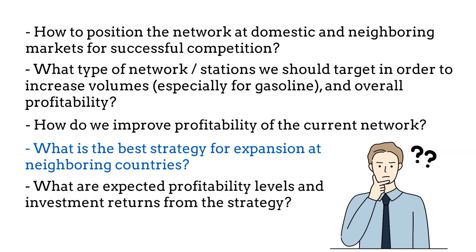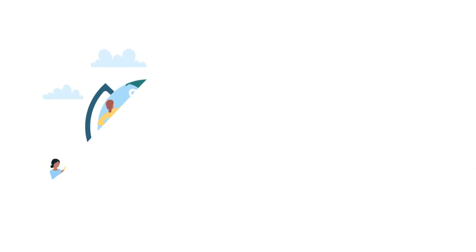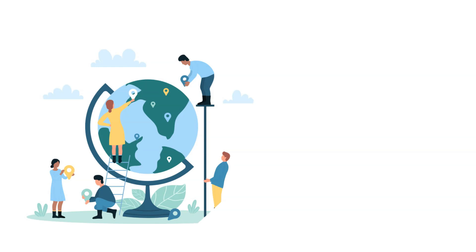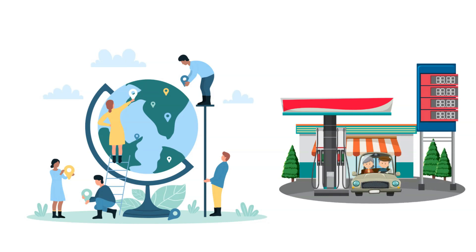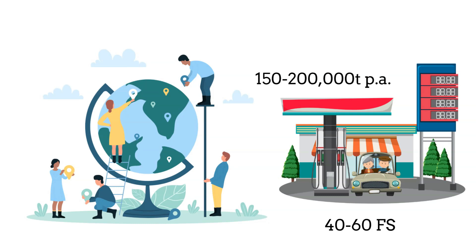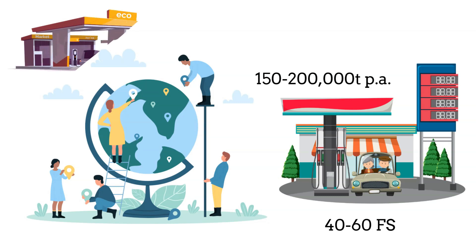When we speak about neighboring markets — what is the best strategy for expansion in neighboring countries? There is a similar set of activities to take into consideration, yet with a different emphasis. First of all, we'll have to expand the network by 40 to 60 new stations to capture an additional 150,000 to 200,000 tons of fuel sales, plus think about what to do with the existing 50 stations.